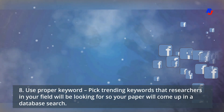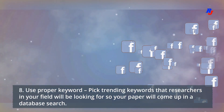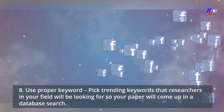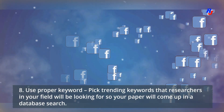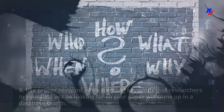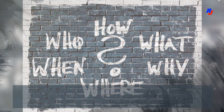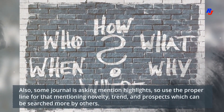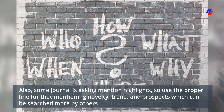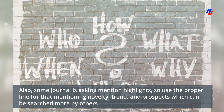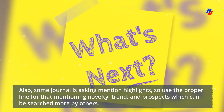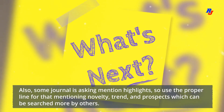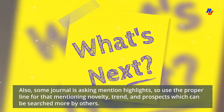Eighth point — use proper keywords. Pick trending keywords that researchers in your field will be looking for, so your paper will come up in database searches. Some journals also ask you to mention highlights, so use the proper lines for that, mentioning novelty, trends, and prospects which can be searched more by others.